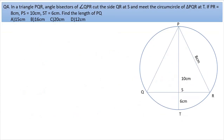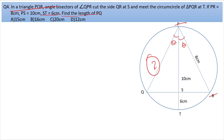The next question: in triangle PQR, the angle bisector of angle QPR meets QR at S and the circumcircle of triangle PQR at T. If PR = 8 cm, PS = 10 cm, and ST = 6 cm, find the length of PQ.